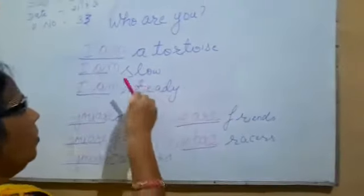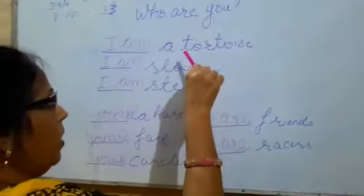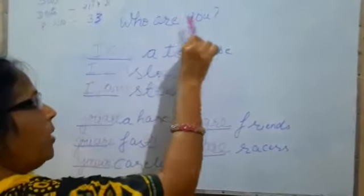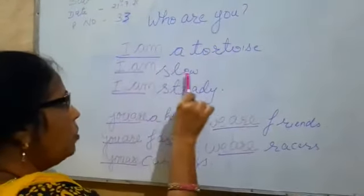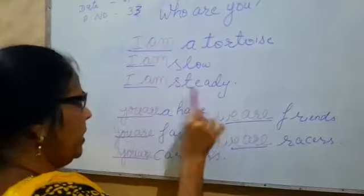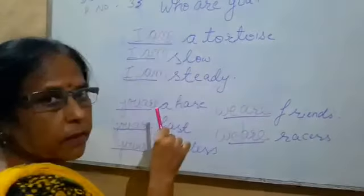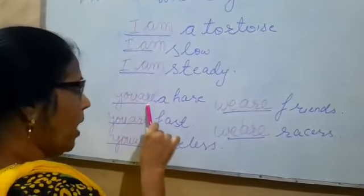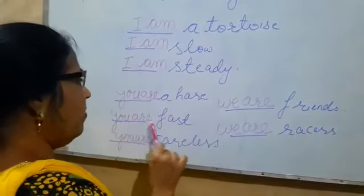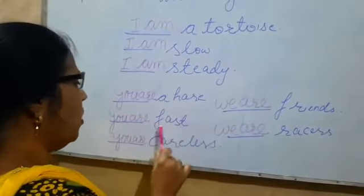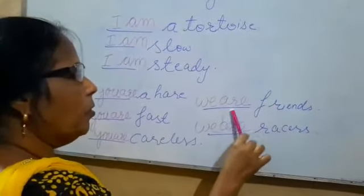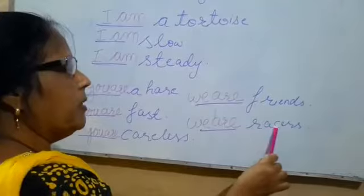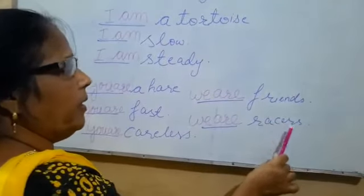फिर से देखो बच्चों — hare और tortoise दोनों बात कर रहे हैं। Hare पूछता है: who are you? Tortoise बोलता है: I am a tortoise, I am slow, I am steady। Tortoise बोलता है: you are a hare, तुम खरगोश हो, you are fast, you are careless। और we are friends, we are racers — हम लोग race लगाने वाले हैं।